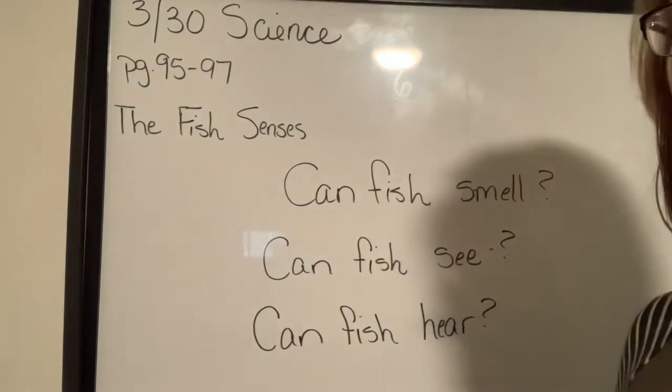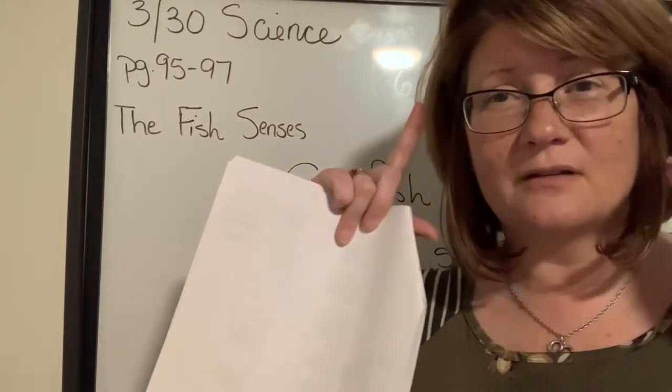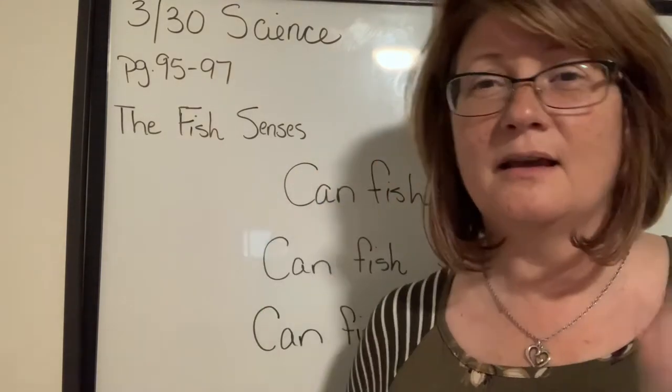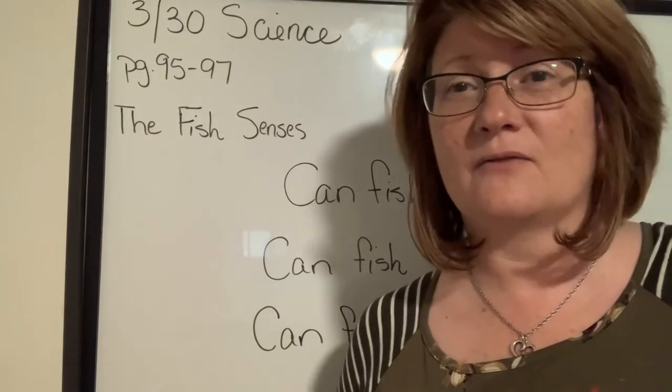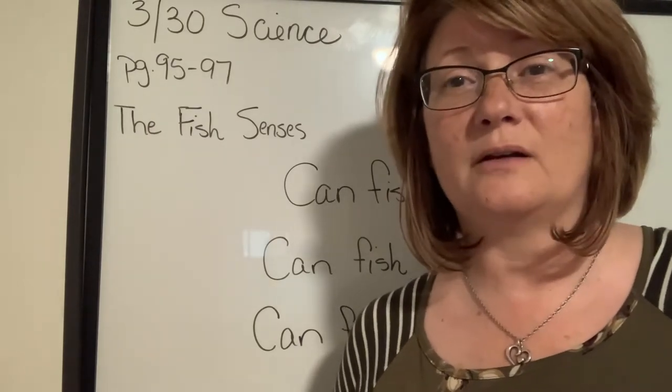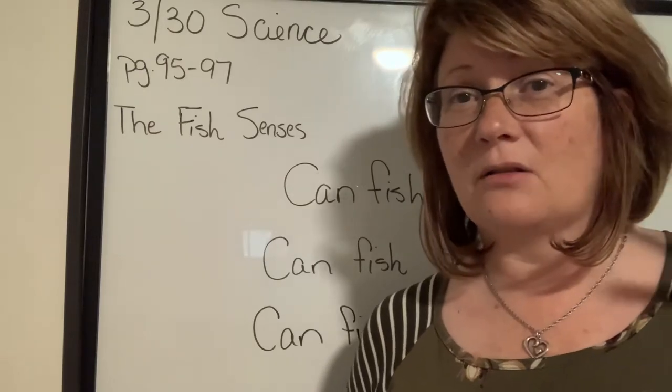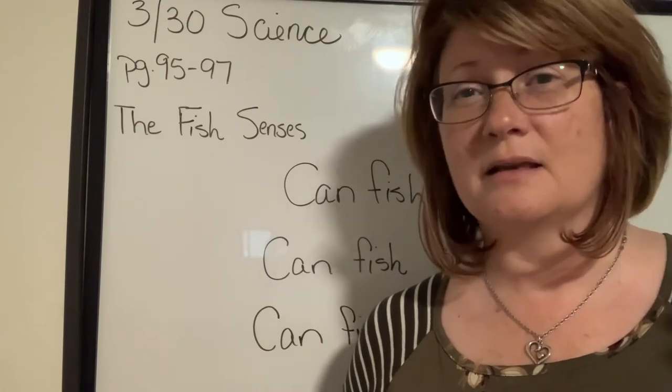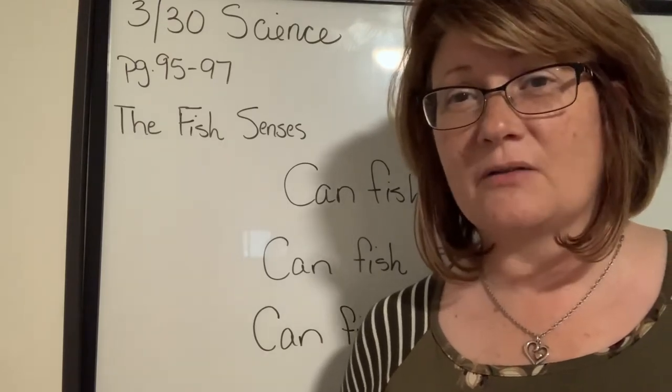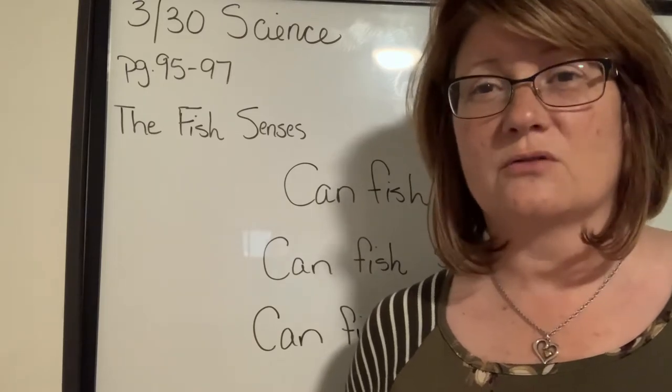Can fish see? Yes, they can. Most of them have the eyes on each side. Those that live closer to the surface and they have more sunlight are able to see quite well. Those that are deeper in the ocean, their eyes tend to be a lot bigger so that they can absorb more of the light because there's not as much down there. They're not able to see as well. It's much darker, the things that they see.